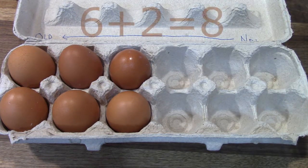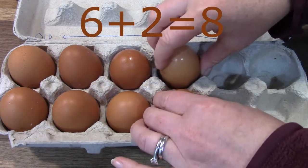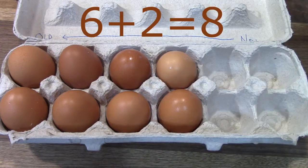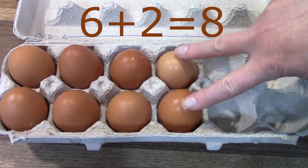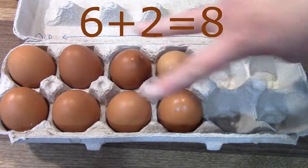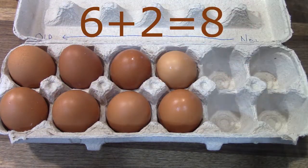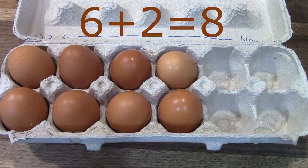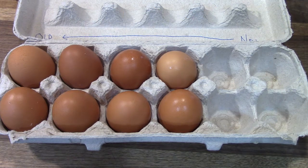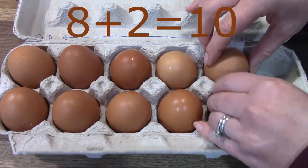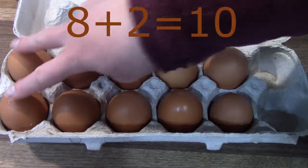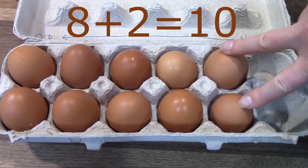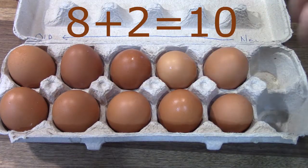Six. Now I'm gonna add two more eggs to our six eggs, so I have six plus two more — six plus two is eight. I'm gonna add two more eggs — eight plus two is ten.